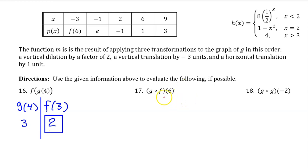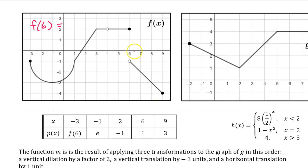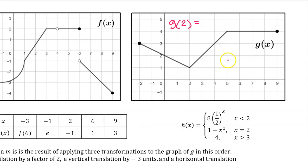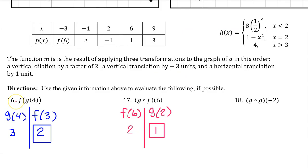For the composite notation with the open circle you work from right to left. So first we do F at 6. Here's function F and the input value of 6. So is the value of F at 6 at negative 1 or positive 2? It's at positive 2 — it's always the closed circle, never the open circle. So F at 6 is 2. Moving to the left, it's time to evaluate function G at 2. Here's function G and the input value of 2. G at 2 is 1. That's it for number 17.